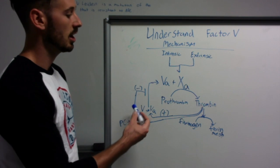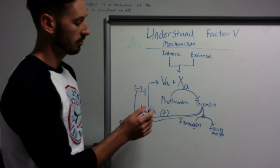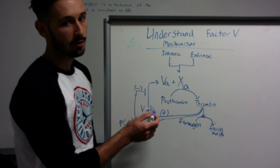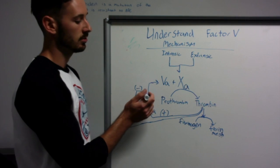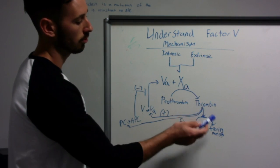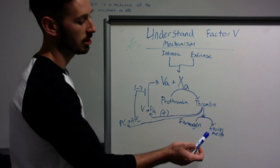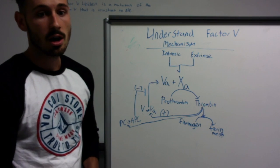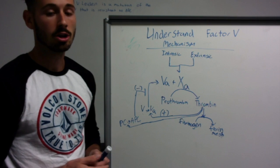Activated protein C cuts activated Factor V, and that inhibits the process of more thrombin and fibrinogen from being cut, thus halting the clotting process.